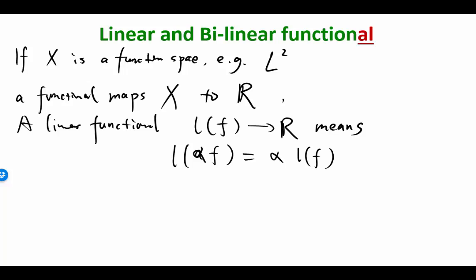So the functional is linear — not the function is linear. The functional being linear means if you scale the function by a factor of two, the value of the functional also gets scaled by a factor of two.